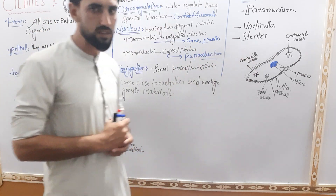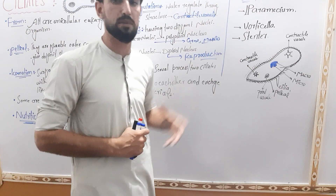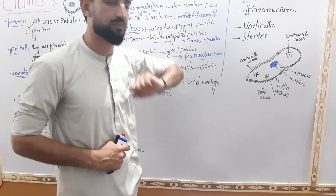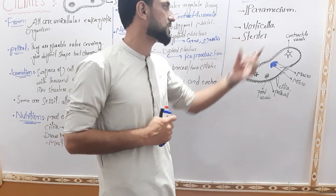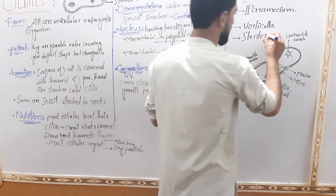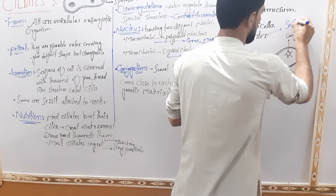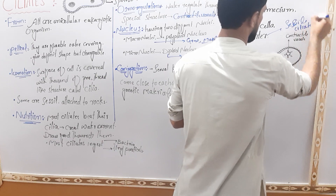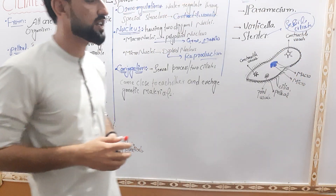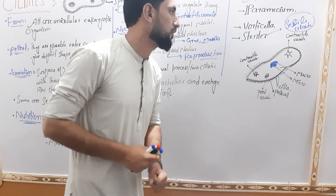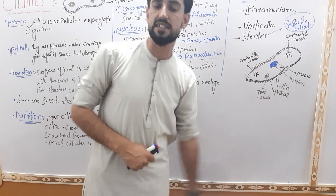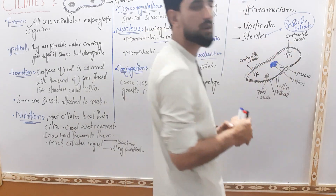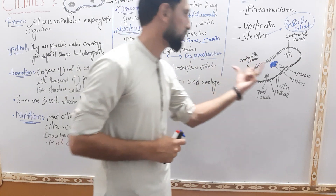The well-known examples of ciliates are Paramecium and Vorticella. Stentor is also a ciliate example. Paramecium has a typical structure: it has two membrane layers — an outer pellicle and an inner membrane. The hair-like or thread-like structures on the surface are the cilia.